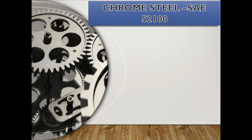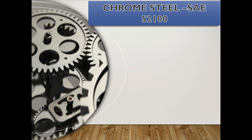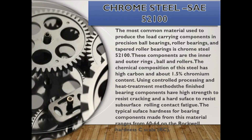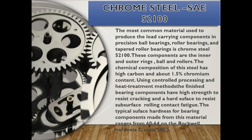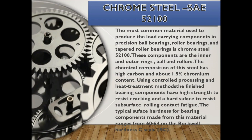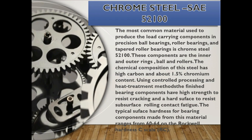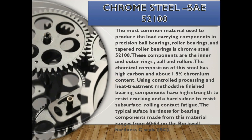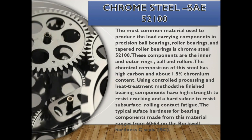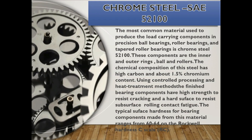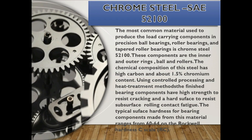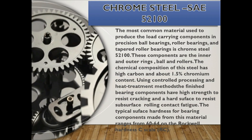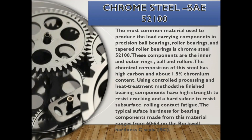Chrome steel SAE 52100. The most common material used to produce the load-carrying components in precision ball bearings, roller bearings, and tapered roller bearings is chrome steel 52100. These components are the inner and outer rings, balls, and rollers. The chemical composition of this steel has high carbon and about 1.5% chromium content.